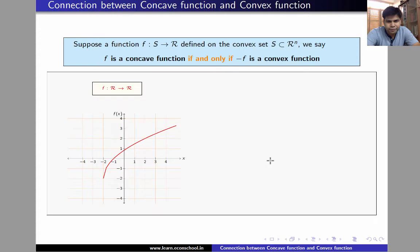Let us see this in graph. As we can see that this red graph represents a concave function. If we plot minus f, then this is how it's going to look. So, this blue graph appears to be a convex function.